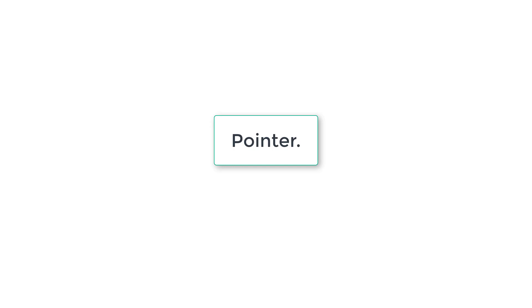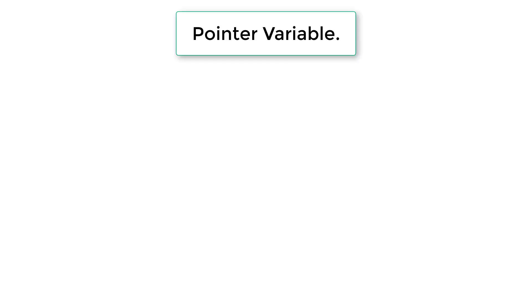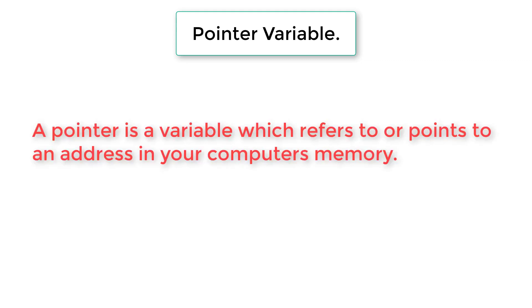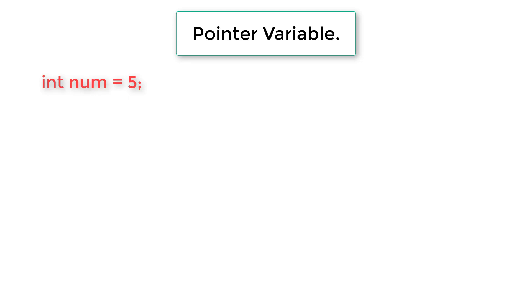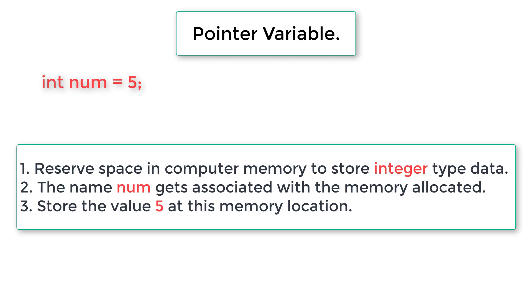Let us get started and learn two or three basic concepts which are very important for your overall knowledge about pointers. So what is a pointer? A pointer is a variable which refers to or points to an address in your computer's memory. If you write `int num = 5`, your computer reserves space in memory to store integer type data, and the name `num` gets associated with that allocated memory location.